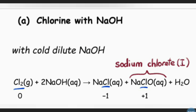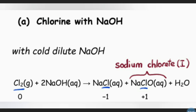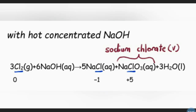The product mixture is what is normally sold as bleach. In terms of oxidation states, chlorine has changed from zero in Cl₂ to negative one in sodium chloride and positive one in sodium hypochlorite. Chlorine is both oxidized and reduced — this is a good example of a disproportionation reaction.